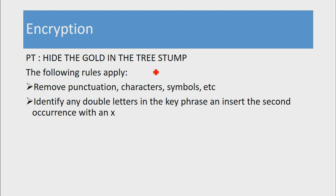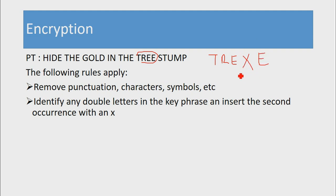For example, in the word 'tree' we have double letters EE. What you do is insert an X in between the two double letters, so instead of 'tree' you have T-R-E-X-E. The reason we do this is to eliminate patterns within the plain text, because two E's next to each other would form a recognizable pattern making it easier for a third-party interceptor to perform cryptanalysis on your message.